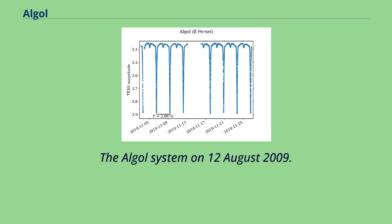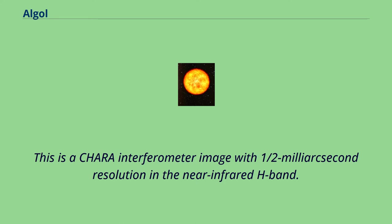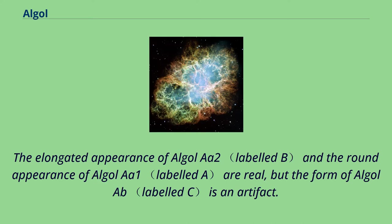The Algol system on August 12, 2009. This is a CHARA interferometer image with half milliarcsecond resolution in the near-infrared H-band. The elongated appearance of Algol A2 and the round appearance of Algol A1 are real, but the form of Algol Ab is an artifact.